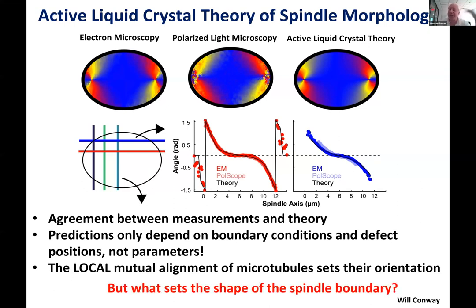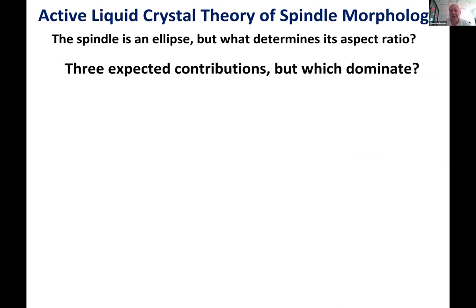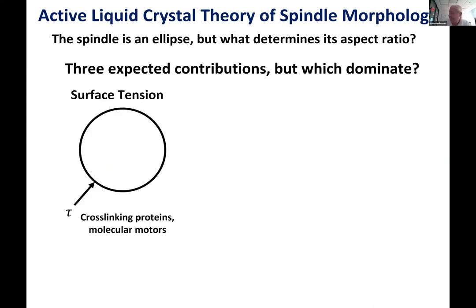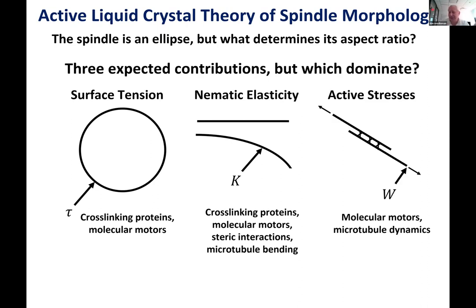But what sets the actual shape of the spindle boundary — specifically, what determines its aspect ratio? From this perspective, there are three possible contributions: surface tension (microtubules binding each other via cross-linking motors, which wants to make the spindle round), nematic elasticity (filaments wanting to align, which extends the spindle), and active stresses due to molecular motors (which could extend or contract the spindle depending on their sign).